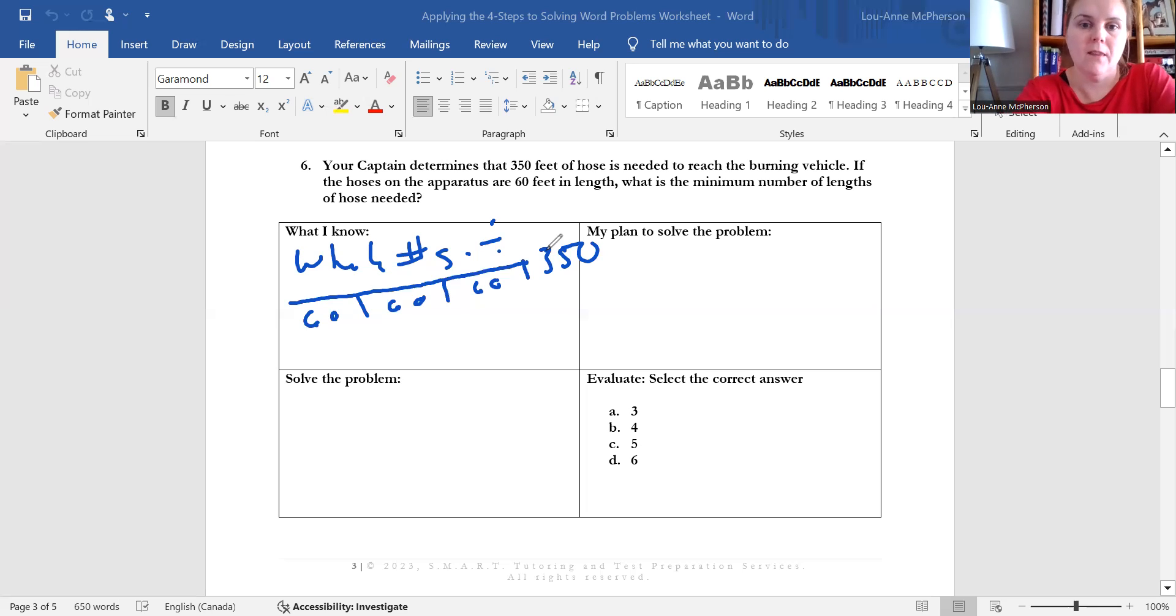And then the last thing you want to keep in mind is what you're asked to solve. In this case, you're looking for a minimum number of lengths of hoses. So minimum number of hoses. Okay, moving on to plan to solve your problem, you know that you're going to divide 350 by 60.